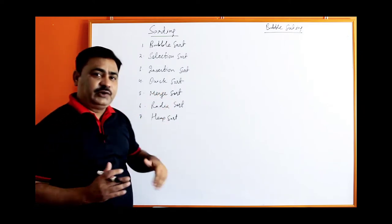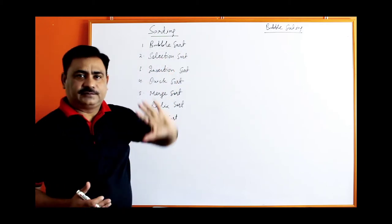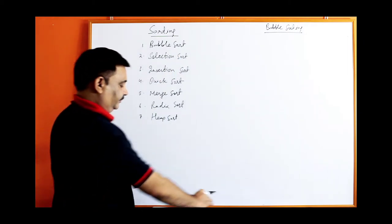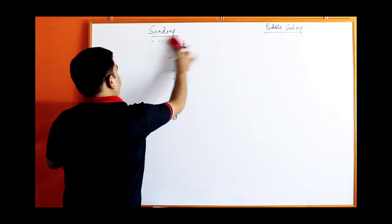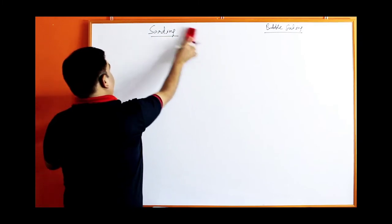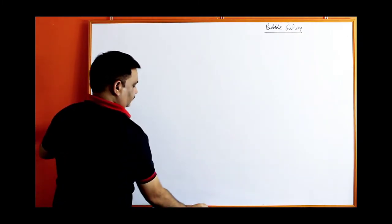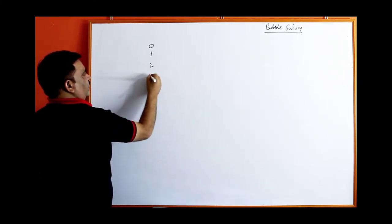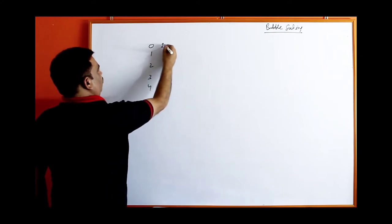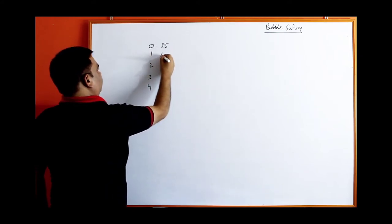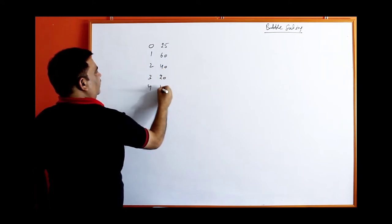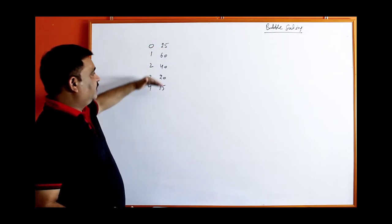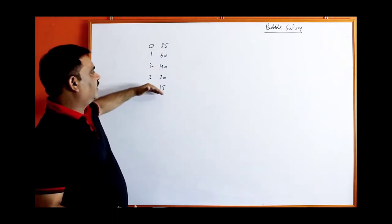In this class, I am going to explain only about bubble sorting first of all. How to apply bubble sorting? Suppose we have some values which are not arranged. The values are 25, 60, 40, 20, and 15.